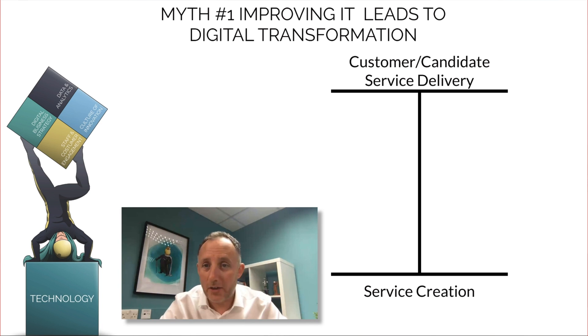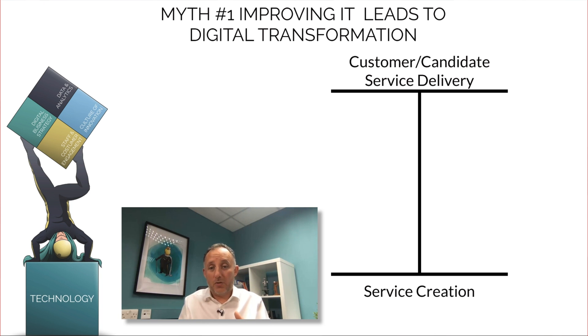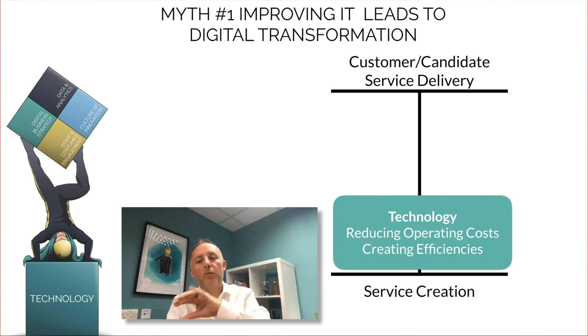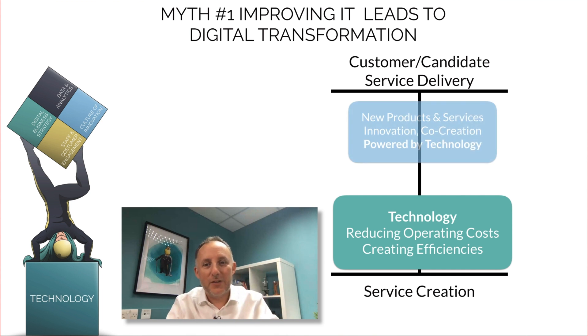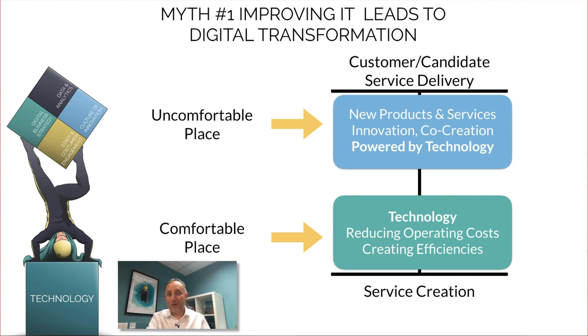If we have at the top of our organization the customer, and the service or product delivery sits there, and at the bottom we have service creation — the profit we receive comes as we move through service creation to service delivery, and we have to remove those costs. What we find is that technology that reduces operating costs and creates efficiency is a very easy win, an easy decision to make. New products and services, however, is a much more uncomfortable place. If we build a business case around reducing operating costs, it's quite easy to sign off: invest X, get a return of Y, do things faster, smarter, cheaper. But I argue that's not transformational — that's operational efficiency.